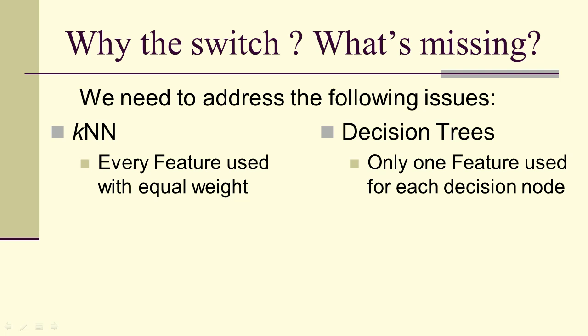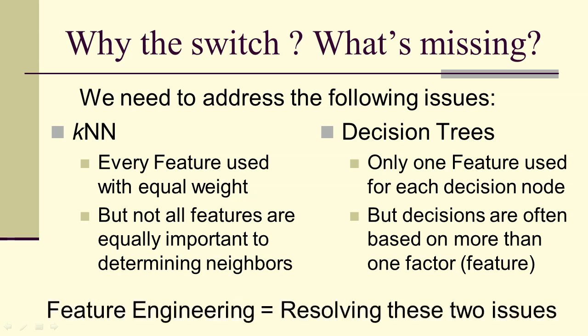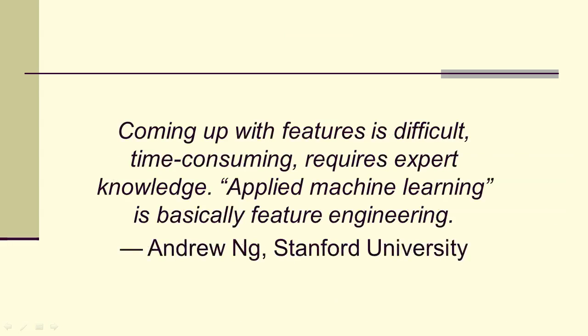Whereas in decision trees, there was only one feature used at each node. Not all features are equally important in determining neighbors, and decisions are often based on more than one feature. So we need to do some feature engineering. We need to resolve these two issues. We need to choose the right weight and number of the features in order to make our model. Now, Andrew Ng said that this is the most important thing you do in machine learning, is the feature engineering.